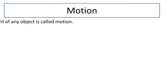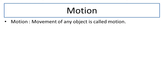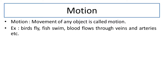First of all, we will talk about motion. Motion can be defined as the movement of any object — the movement of any object is basically called its motion. Whenever an object changes its position with respect to time, we call it motion. For example, birds are flying, fish swims, or blood flows through veins and arteries. These are all examples of motion.